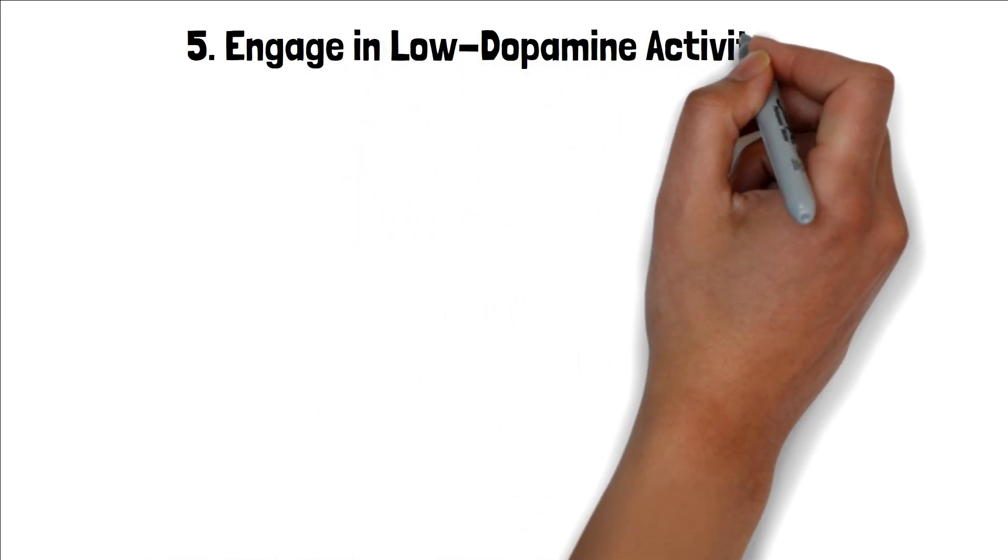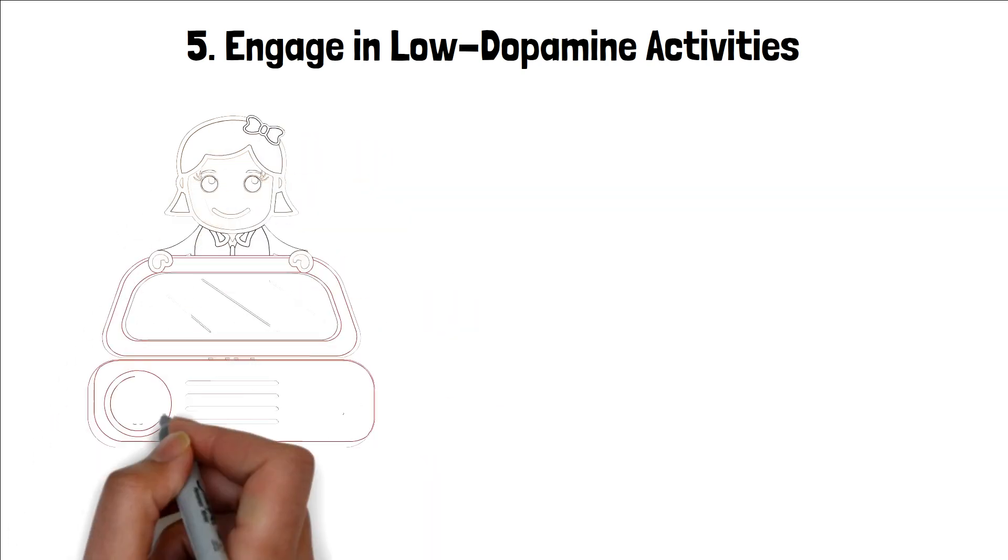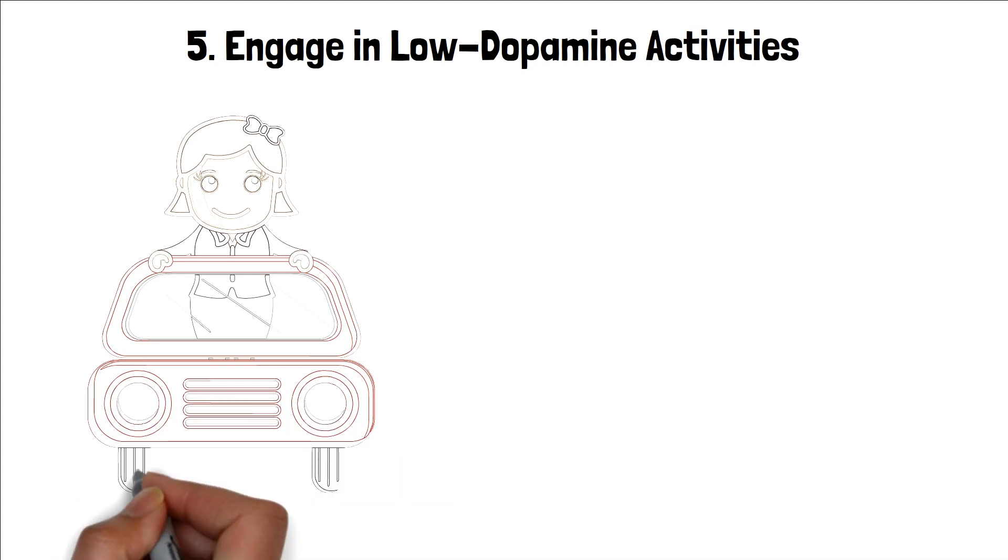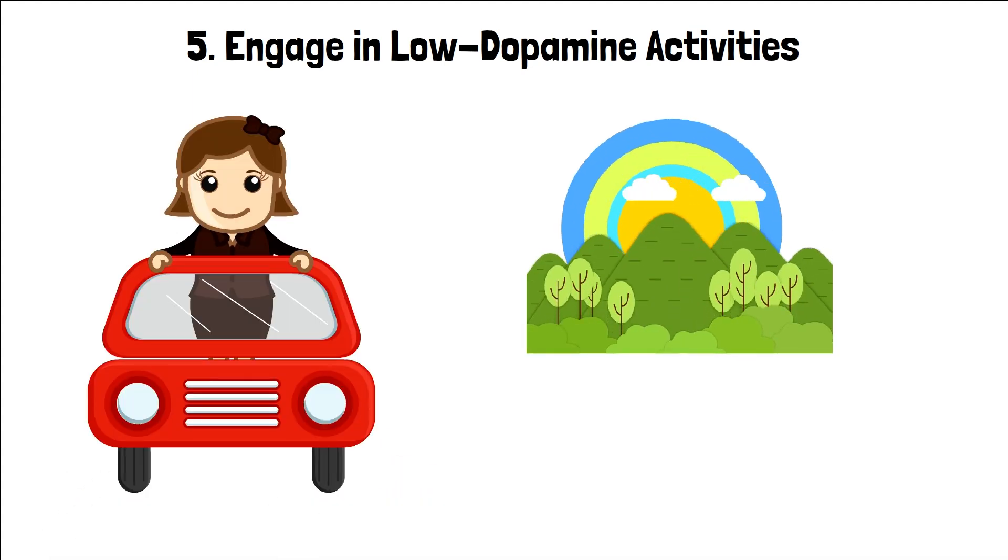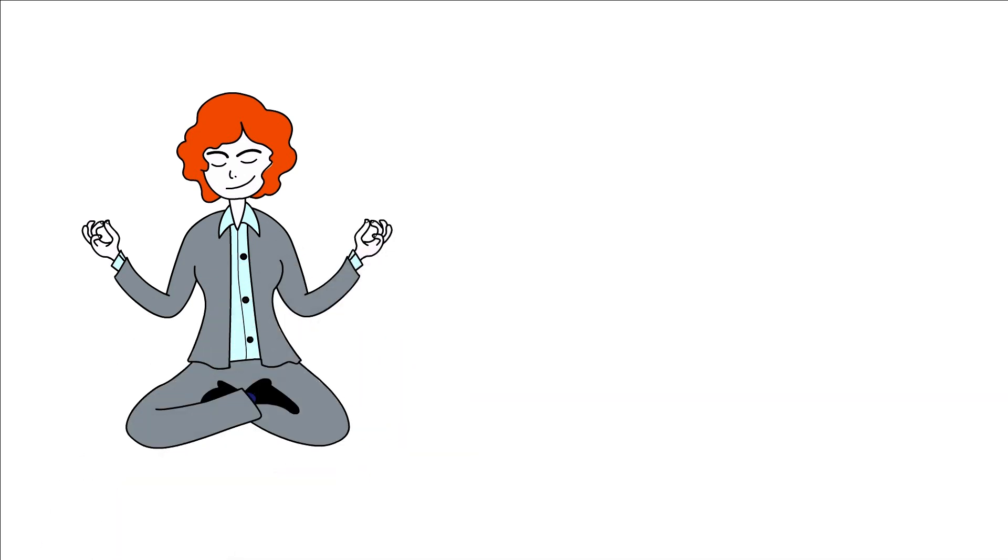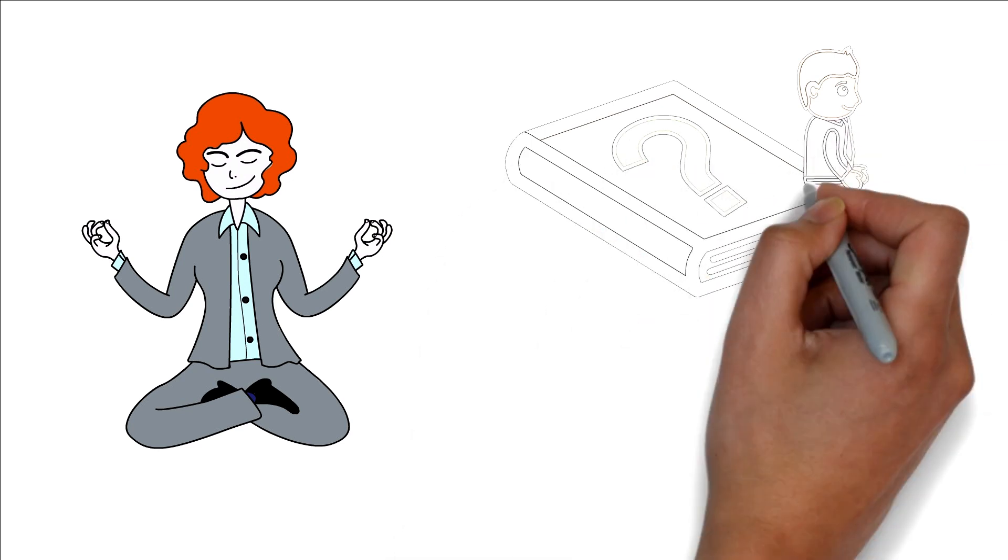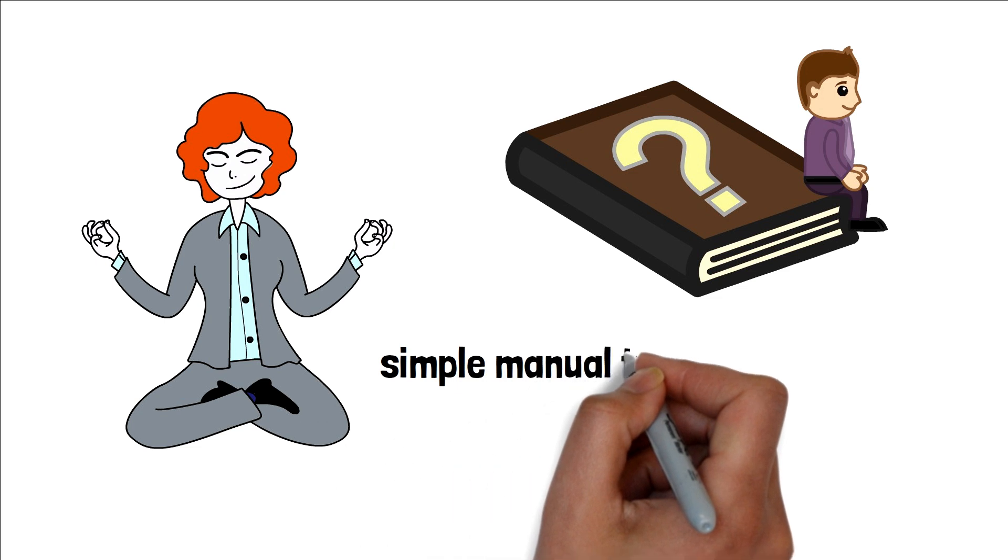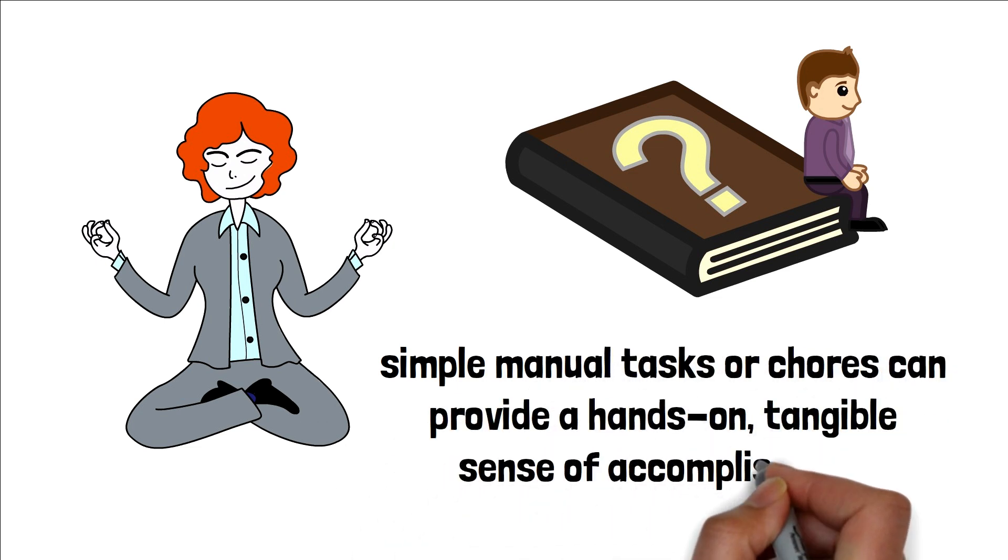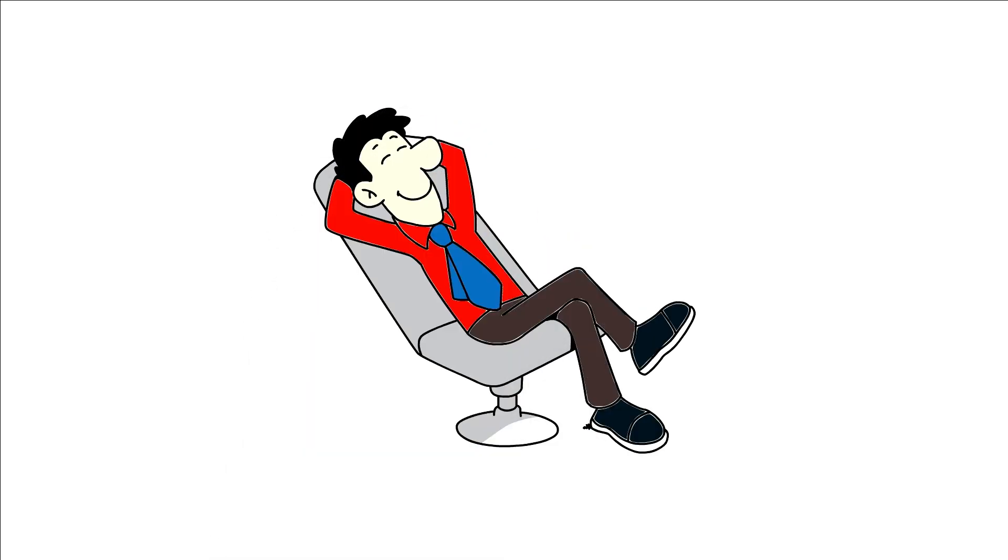5. Engage in low-dopamine activities. In your journey to recalibrate your dopamine levels, it's essential to incorporate low-stimulation activities that ground and center you. Embrace serene walks in nature for environmental reconnection and utilize meditation for inner peace and heightened self-awareness. Dive into reflective journaling, expand your horizons with non-fiction books, and practice relaxation techniques like deep breathing. Moreover, simple manual tasks or chores can provide a hands-on, tangible sense of accomplishment. By integrating these activities into your routine, you create a balanced, mindful approach to your dopamine detox journey.